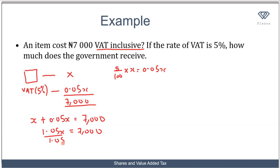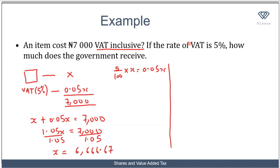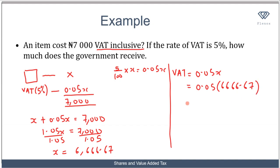Dividing both sides by 1.05, we get x equals approximately 6,666.67 naira. So the cost of the item before tax is 6,666.67 naira. The question asks for the amount the government receives, which is five percent of the cost of the item — that is 0.05 times x. So the value added tax equals 0.05 times 6,666.67, which gives 333.33 naira.